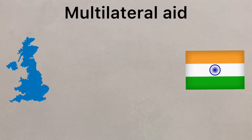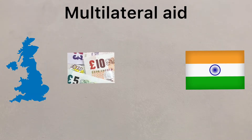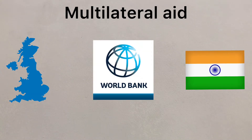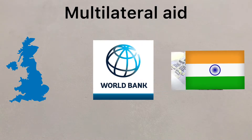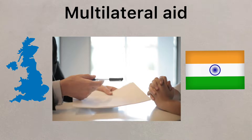Multilateral aid is where HICs will donate money, but it will go through an organisation like the World Bank, who can then redistribute the money to LICs. There may be conditions put on this aid, but they are usually beneficial to the development of the LIC.